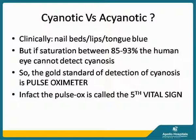Cyanotic versus acyanotic is the first question which needs to be answered. Clinically, the nail beds may be blue, lips and tongue may also be blue in central cyanosis. But if saturation is between 85 and 93 percent, the human eye cannot detect cyanosis — that is an important fact to remember. So the gold standard for detection of cyanosis is the pulse oximeter, which is called the fifth vital sign. Without a pulse oximeter, one cannot differentiate between cyanotic and acyanotic heart disease.